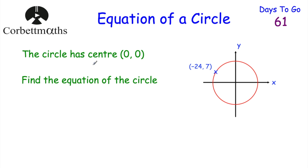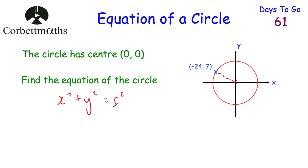Next question: a circle has centre (0, 0), the origin, and passes through the point (−24, 7). We've been asked to find the equation of the circle. To do that, the first thing is to find the radius, because the equation will be in the form x squared plus y squared equals the radius squared.